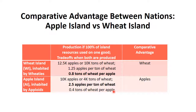This means that Wheat Island has a comparative advantage in wheat — giving up an apple gets it more wheat than it does for Apple Island — whereas Apple Island has a comparative advantage in apples. Apple Island gets 2.5 apples for each ton of wheat it doesn't produce, whereas Wheat Island only gets 1.25.